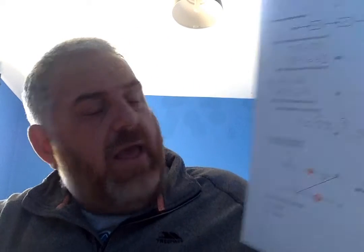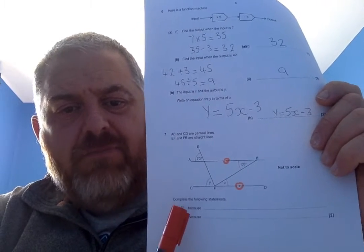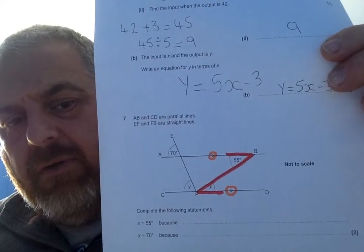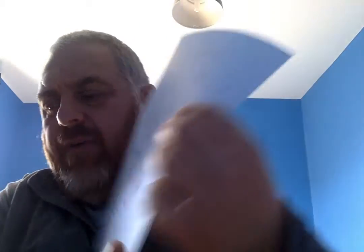And it says x equals 55. So, the letter x is here. And it says because. First thing I'm going to draw on this for you. We have a backwards or a letter z there. It concerns my letter x and my angle 55.